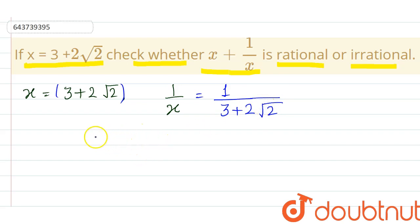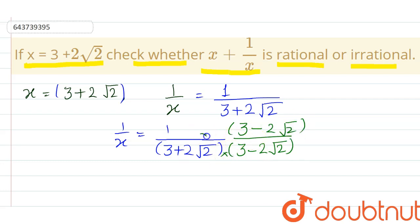To rationalize, we multiply by conjugate, that is 3 minus 2 root 2. Conjugate means just change one of the signs. And as we're multiplying in denominator, we have to multiply in numerator also.